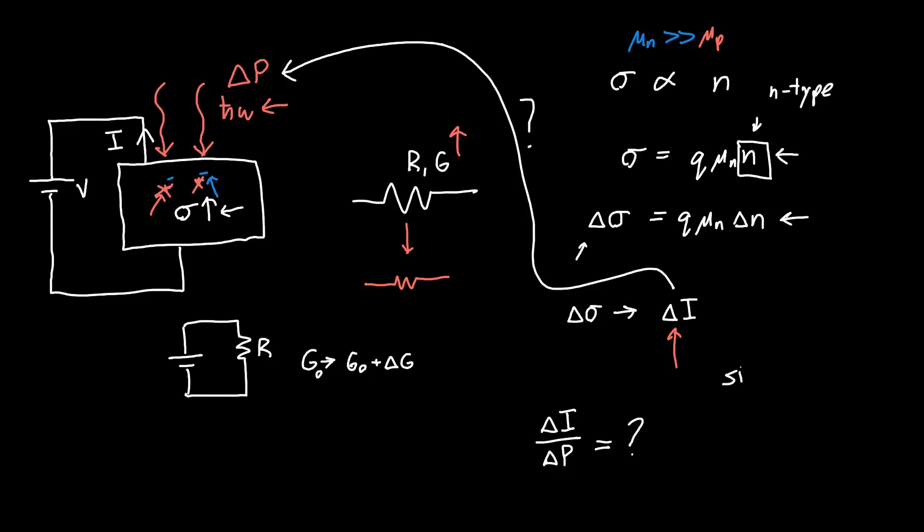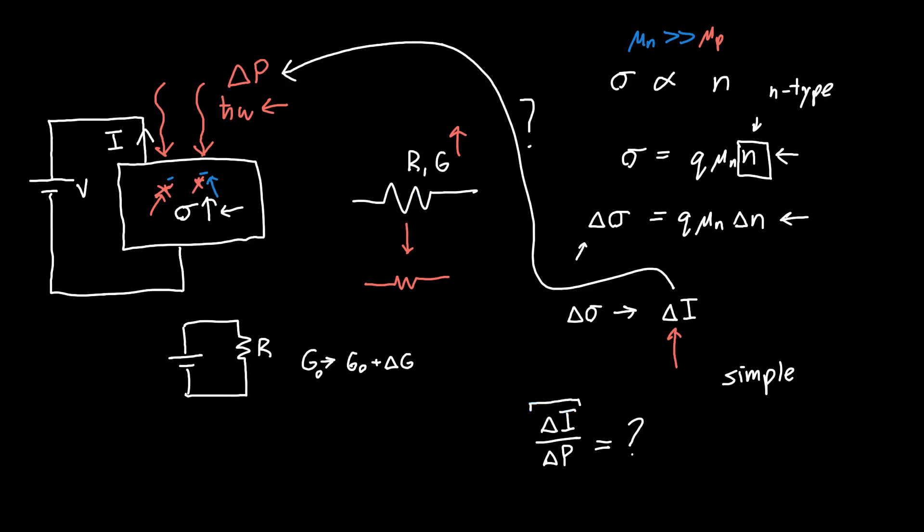We'd like a simple, at least somewhat intuitive answer that gives us some ability to design these photoconductors. So how do we maximize this quantity? For a given optical power I want to get the largest possible change in current. Let's try and figure this out. What is delta I?